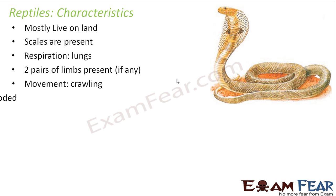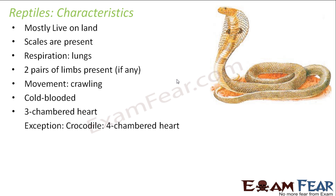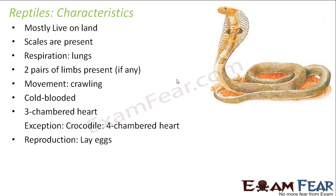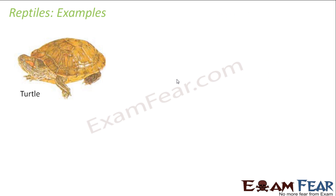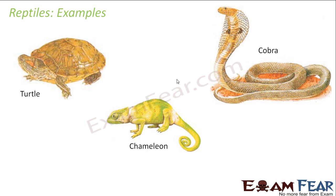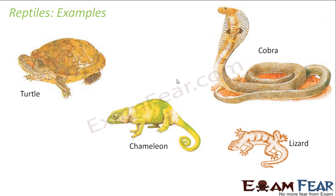Movement is by crawling. They are cold-blooded animals with a three-chambered heart, so the circulatory system is exactly the same as that of amphibians. The exception is crocodile, which has a four-chambered heart. Reproduction happens by laying eggs — they do not give birth directly to their young ones. Some examples of reptiles are turtle, chameleon, cobra, and lizard.